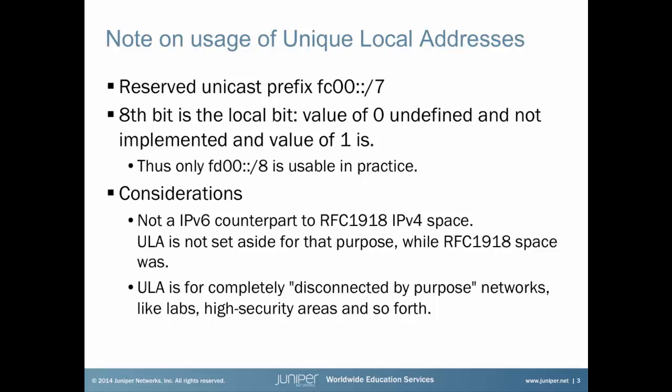Please note, however, that ULA is kind of special in two ways. First, the reserved address space for ULA is FC00::/7, where the eighth bit is the so-called local bit. A value of 0 for this bit is not yet defined, while a value of 1 is. As a result, only the prefix FD00::/8 is in practice usable. The other dimension why ULA is kind of special is about the assumption on its use case — it was certainly never planned to be the IPv6 counterpart of RFC 1918. The original idea for ULA was to have a unique address space for networks that are never connected by purpose, like labs, military entities, and so on.